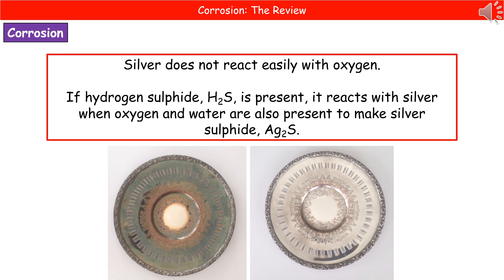The hydrogen sulfide is made by bacteria, and then when oxygen and water are also present in the vicinity of the silver, it goes that tarnished colour.